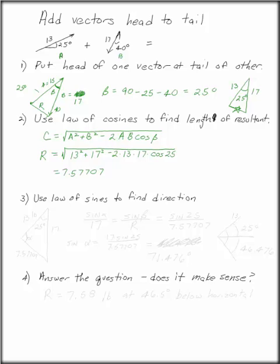Now, once you've done that, use the law of sines to find the direction of R. So in our triangle, let me draw it again. This is 13, this is 17, and now this is 7.57707. This was our 25 degree angle from before.